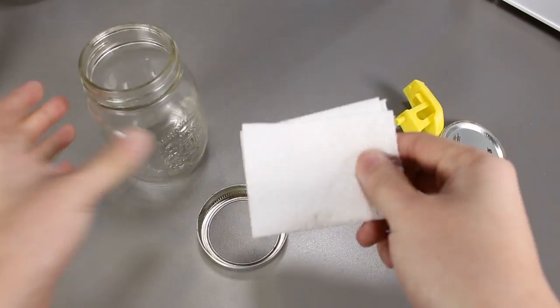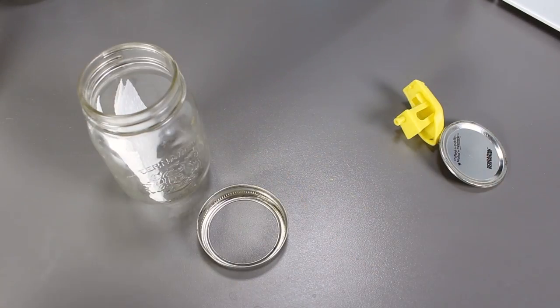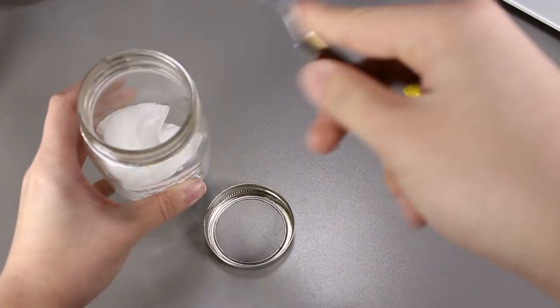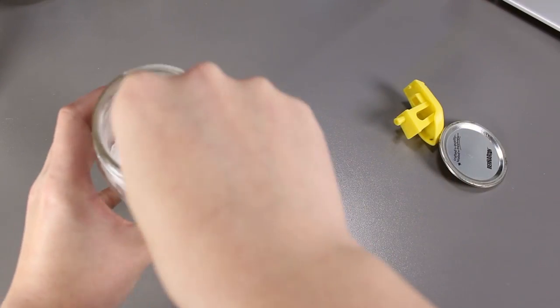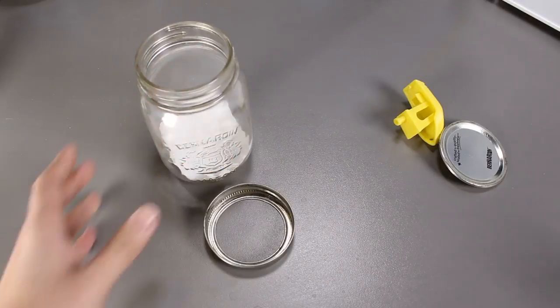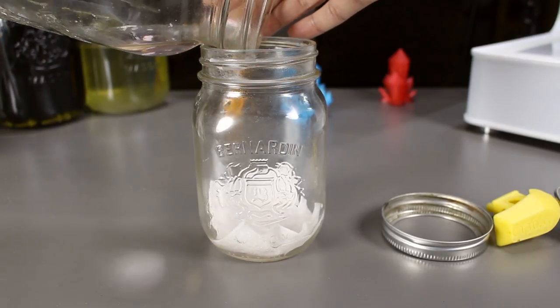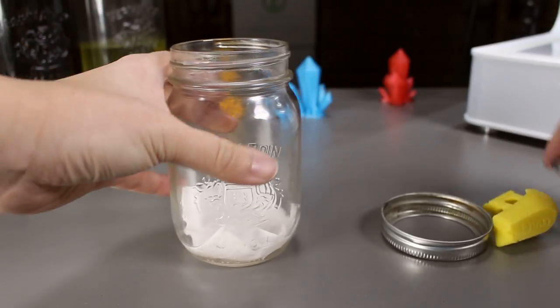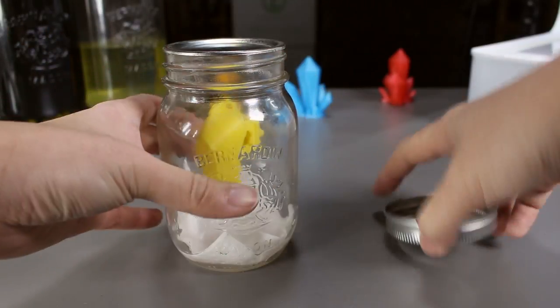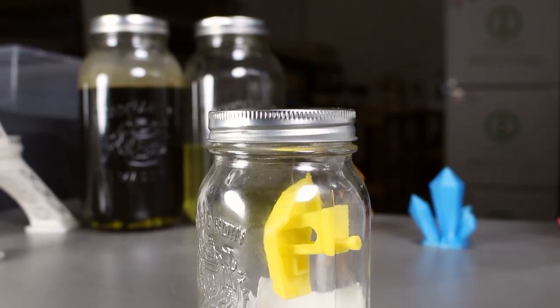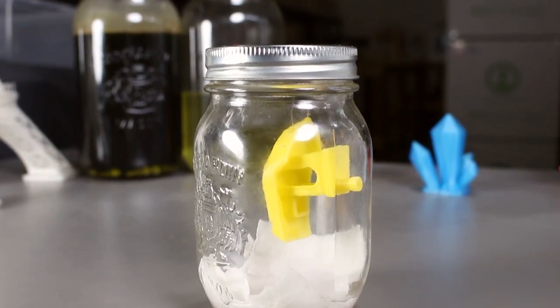The next step will be to place a piece of paper towel into the base of the mason jar and then pour the acetone in. I believe a little bit should be fine. We want it to evaporate after all. Now we close the cap and wait. I'm going to leave it overnight and see how it goes.